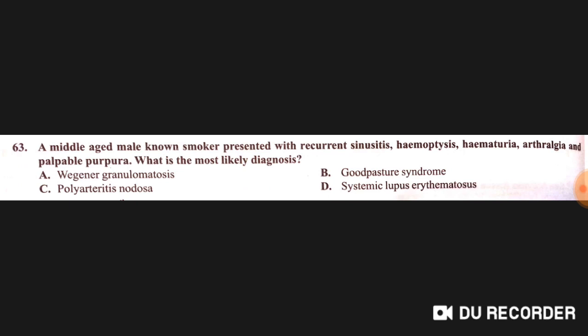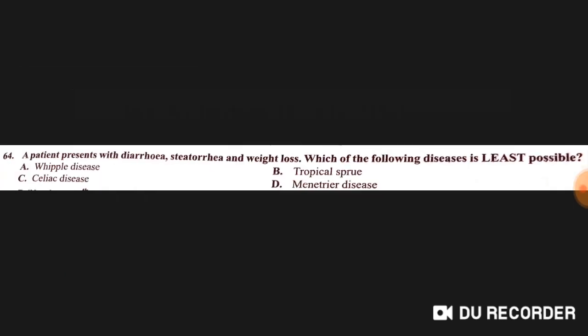A middle-aged male non-smoker presents with recurrent sinusitis, hemoptysis, hematuria, arthralgia, and palpable purpura. This involves upper respiratory tract (sinusitis), lower respiratory tract (hemoptysis), renal involvement (hematuria), joint involvement (arthralgia), and palpable purpura. The diagnosis is clear-cut Wegener's granulomatosis — option A is correct.